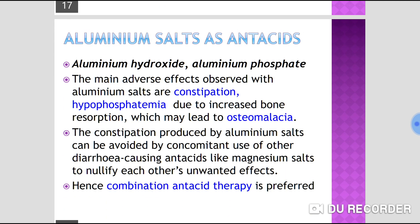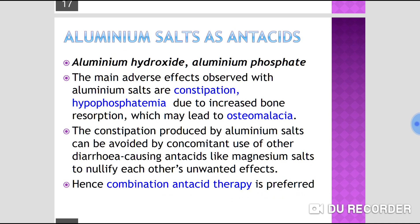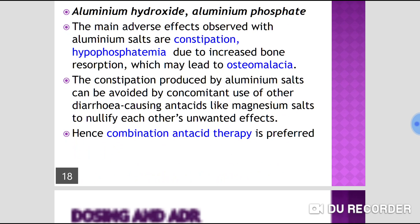Aluminium salts used as antacids include aluminium hydroxide and aluminium phosphate. The main adverse effects are constipation and phosphate depletion (hypophosphatemia) due to increased bone resorption, which may lead to osteomalacia. The constipation caused by aluminium salts can be offset by combining them with diarrhoea-causing antacids like magnesium salts, which is why combination antacid therapy is preferred.